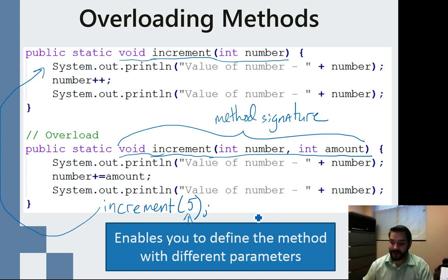The same thing if I give it two. If I go and I call this increment five, comma, one hundred. Now, all of a sudden, I'm giving this method two parameters.